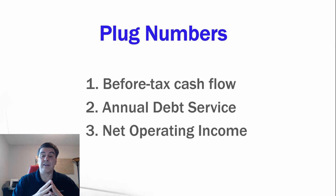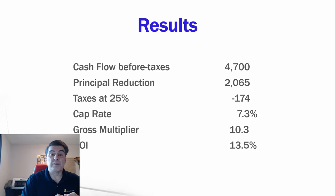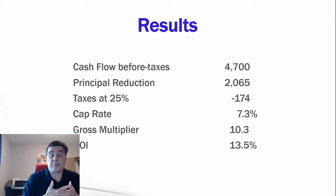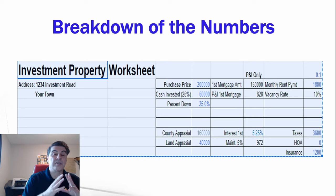The results for this example: cash flow before taxes is $4,700, principal reduction is $2,065. These figures depend on your individual situation. Using a 25% tax rate, the cap rate is 7.3, the gross multiplier is 10.3, and return on investment is 13.5. Now let's look at those numbers in more detail.